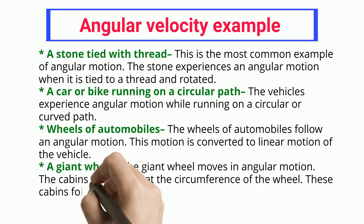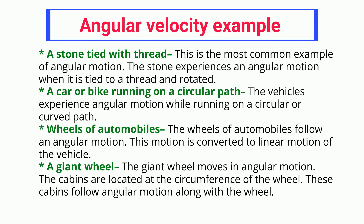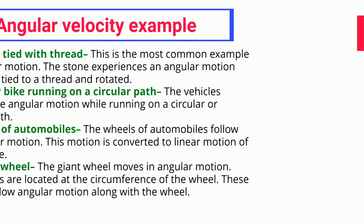Giant wheel: the giant wheel moves in angular motion; the cabins located at the circumference follow angular motion along with the wheel. Wheels of automobiles also follow angular motion, which is converted to the linear motion of the vehicle. Angular velocity types: angular velocity is broadly classified into two types.